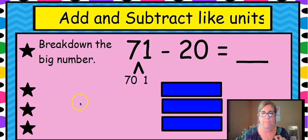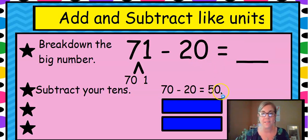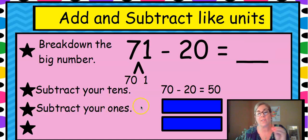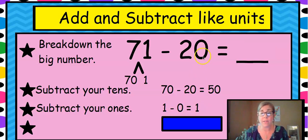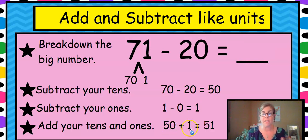So this is a subtraction sign. We are going to subtract our tens. So we have seven tens minus two tens. Seven tens minus two is how many tens? That's right. Five tens, 10, 20, 30, 40, 50. So we have 50. Now we're going to subtract our ones. Ooh, that's a little bit harder. Let's see. We have one one here minus no ones here. So one minus zero is still one because there's none over here. Always start on the left or to the right. Then we're going to add our tens and ones together. So we have five tens, one, 50 plus one is 51.